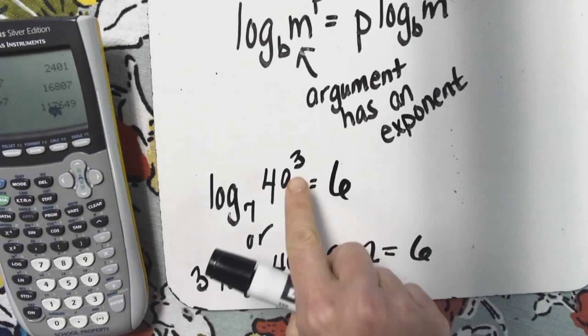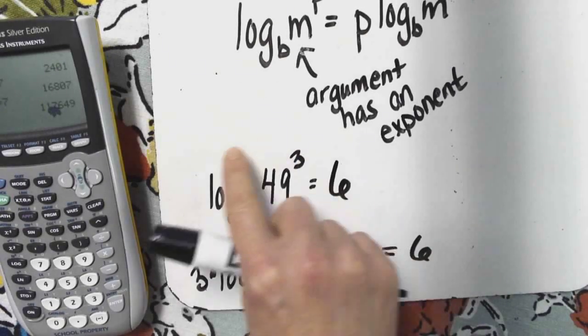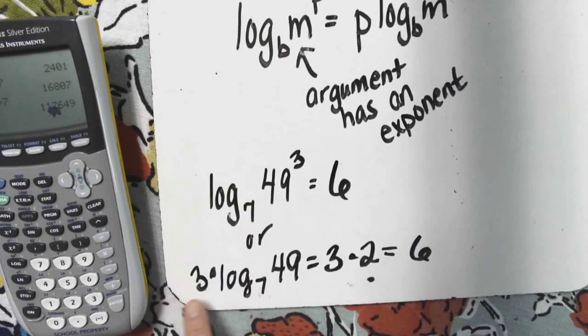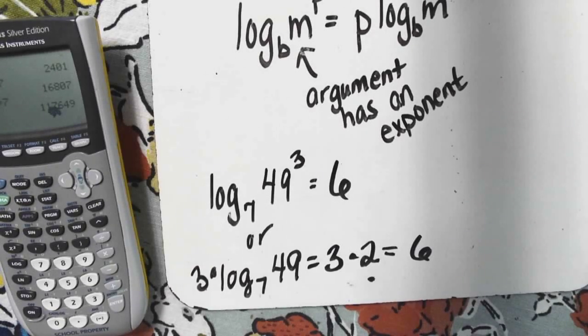So again, if you have an exponent on an argument, you can easily fly it to the front and turn it into multiplication. Hope that helps, review of the three main rules.